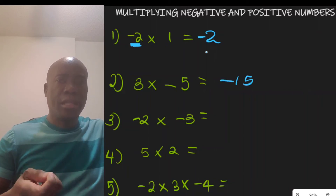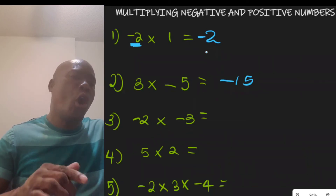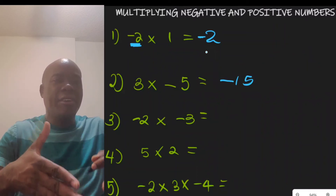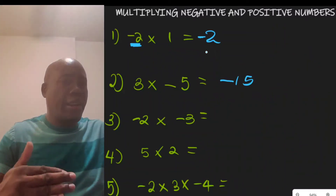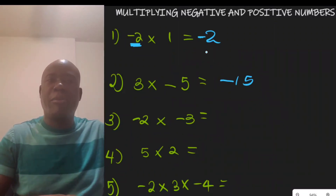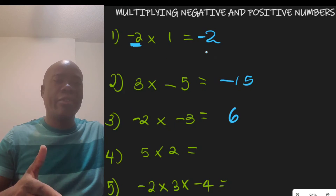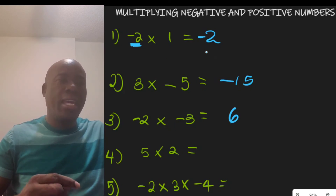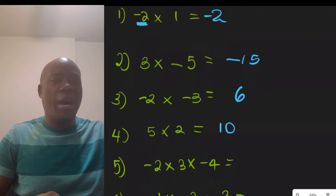Now, negative 2 times negative 3: whenever two negative numbers multiply — or more generally, whenever we have an even number of negative numbers multiplying — we end up with a positive number. So negative 2 times negative 3 is positive 6. And positive 5 times positive 2 is definitely positive 10.